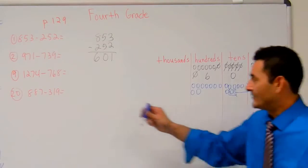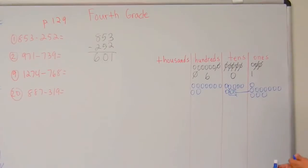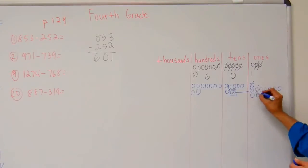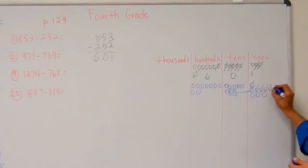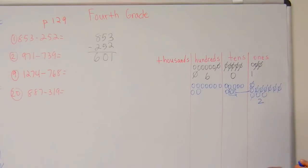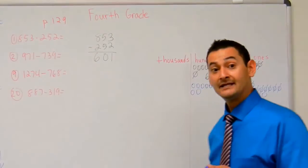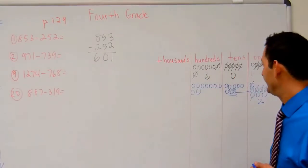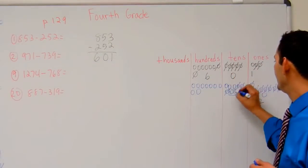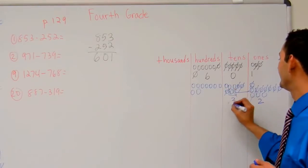Now I go back and take away nine — one, two, three, four, five, six, seven, eight, nine. I've got two left. Now let's take a look at the tens place. I'm going to take away three — take away one, two, three. I've got three left there.